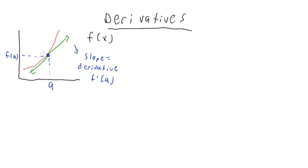Derivative, which we denote f prime of a — that's probably what you're accustomed to as far as derivatives are concerned. But I'm going to show you a better way to think about derivatives. It generalizes pretty nicely. We have to rethink how we think about functions — instead of thinking about it like a graph, we want to think of functions as actions.